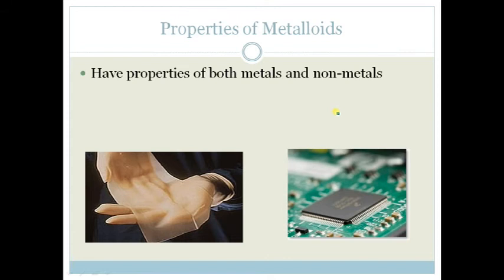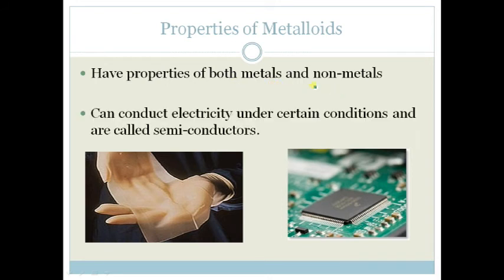The properties of metalloids are that they have both properties of metals and non-metals. They can conduct electricity under certain conditions and are called semiconductors. Here's an example of what we use silicon for.